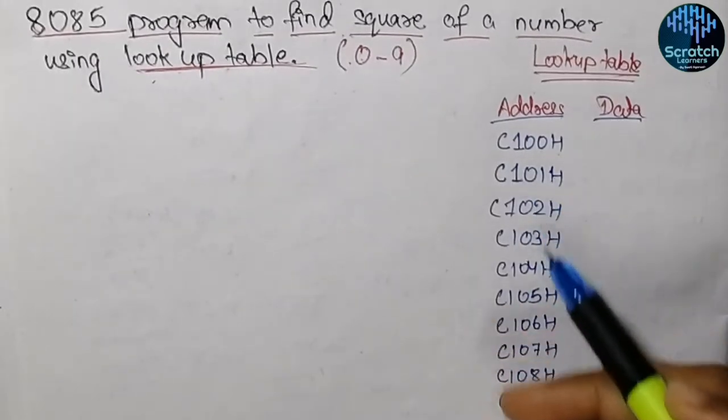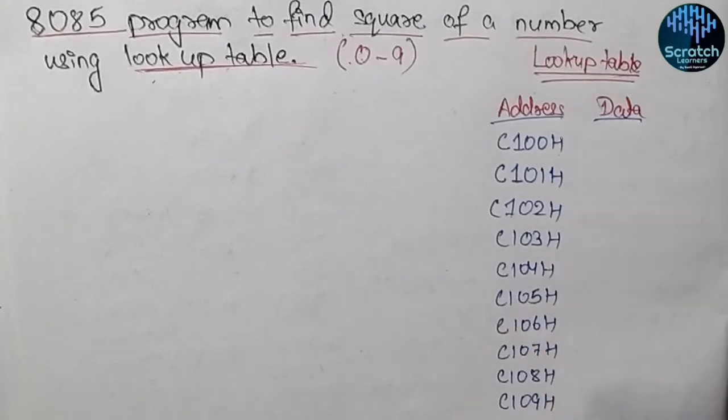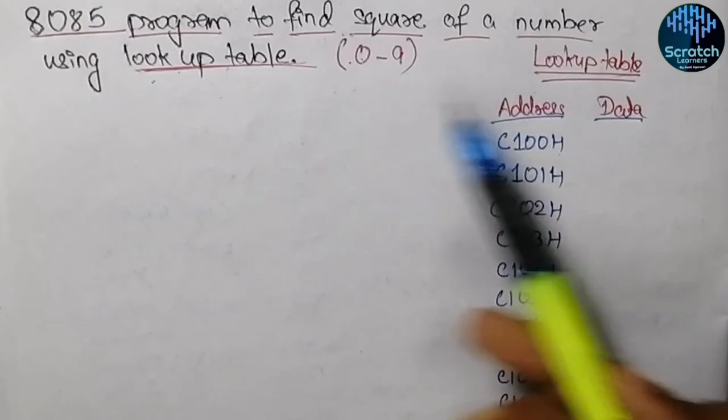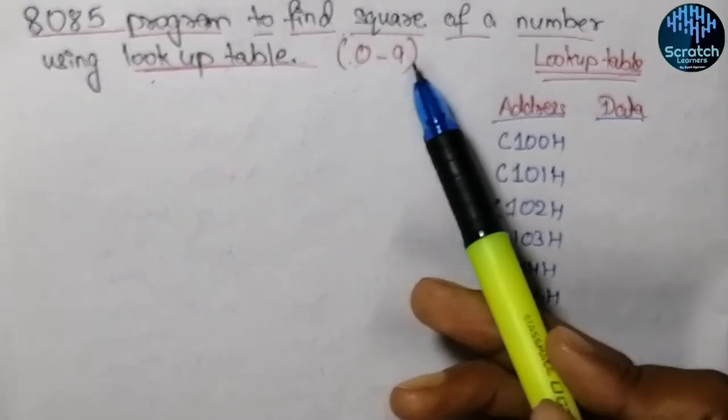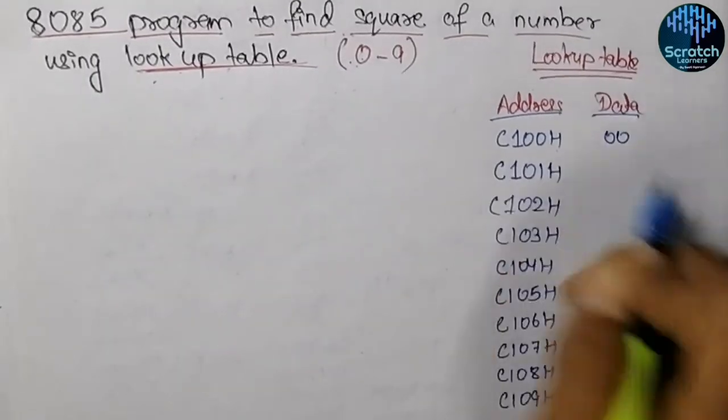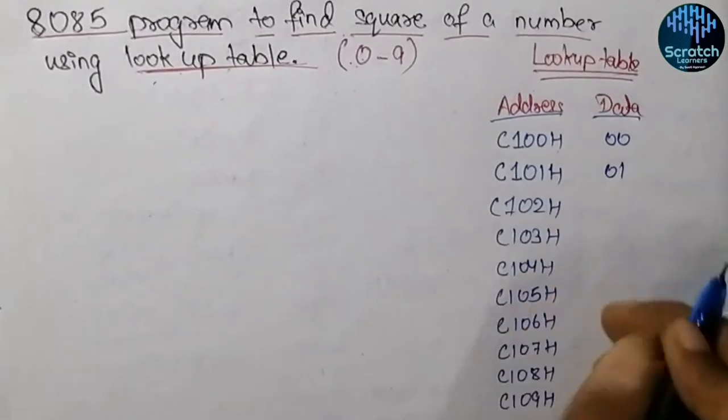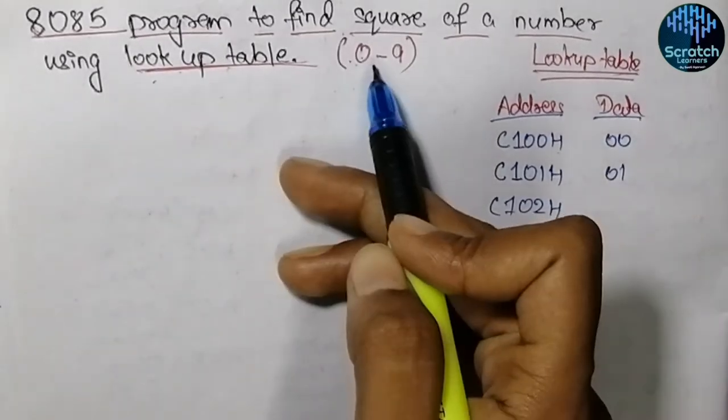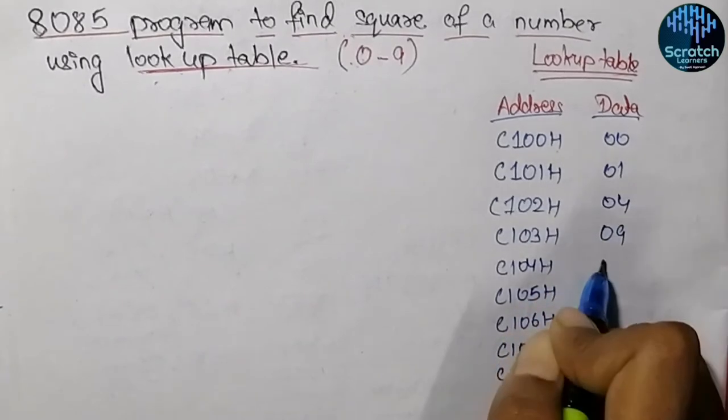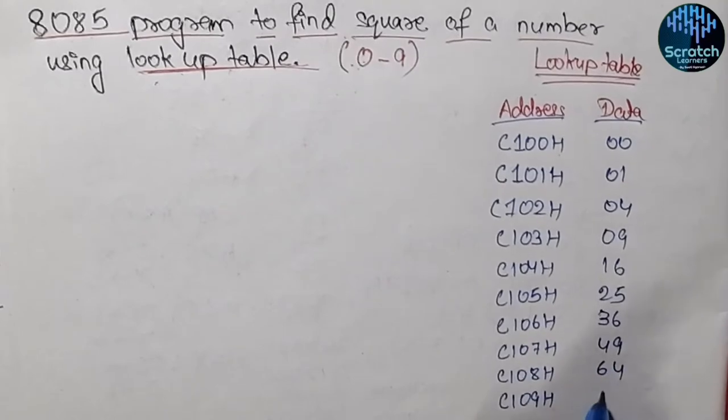I have written consecutive addresses from C100H to C109H. We need to store the square values from 0 to 9. At C100H we store 00 (square of 0), at C101H we store 01 (square of 1), at C102H we store 04 (square of 2), then 09, 16, 25, 36, 49, 64, and 81.